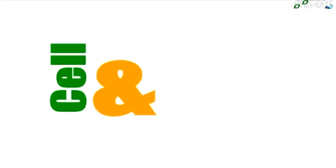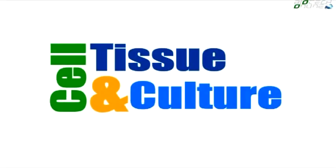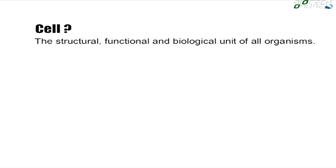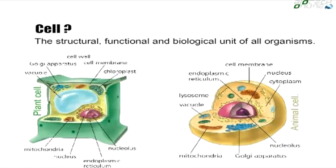Today we are going to start cell and tissue culture and we will be discussing what is plant tissue culture. A cell is a basic unit of life and we have got two different types of cell: plant cells and animal cells.